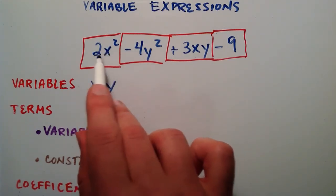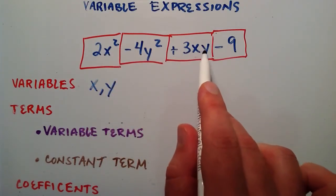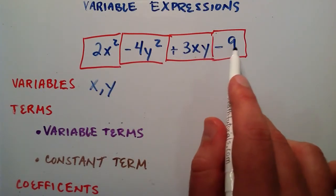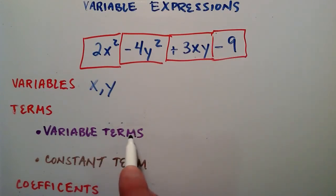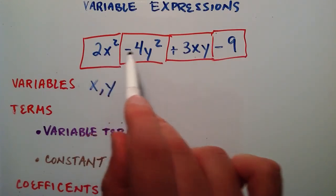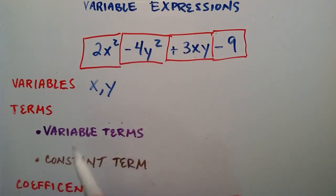Our variable terms are basically the terms that have a variable in them. We've got one here, there's an x, there's a y, there's an x and a y. This guy doesn't have one, so he's not a variable term. A term that has a variable attached to it is a variable term.